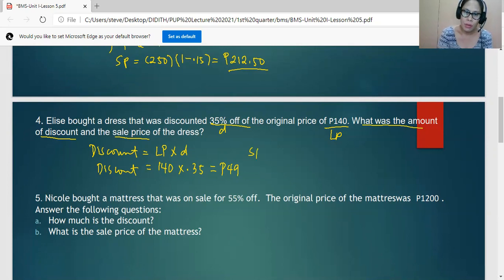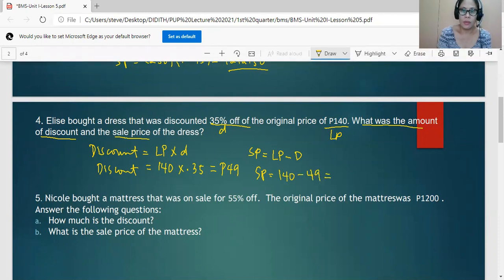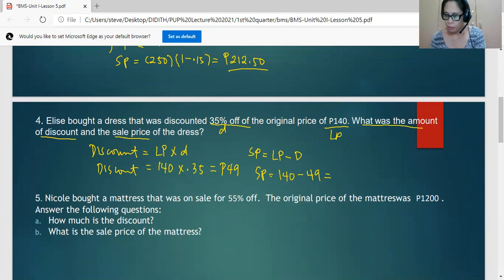The selling price here is equal to 140 less the discount 49. So now the dress can be sold at 91 pesos only.